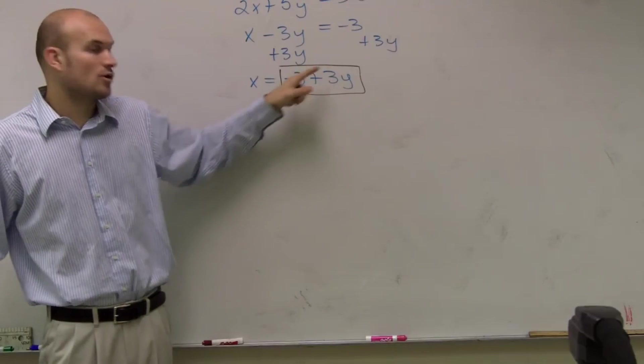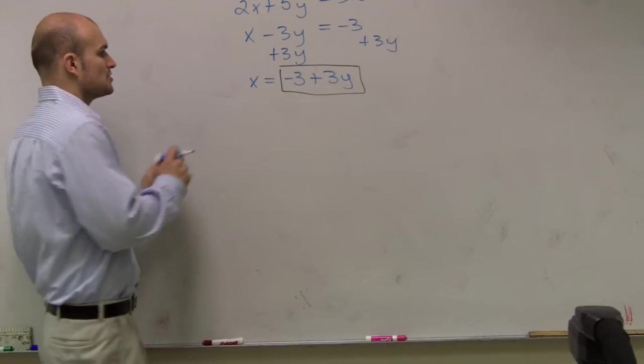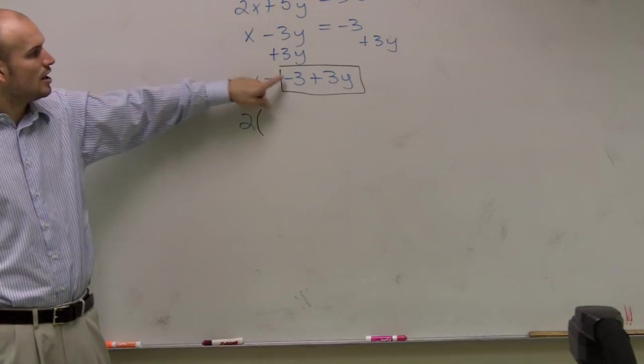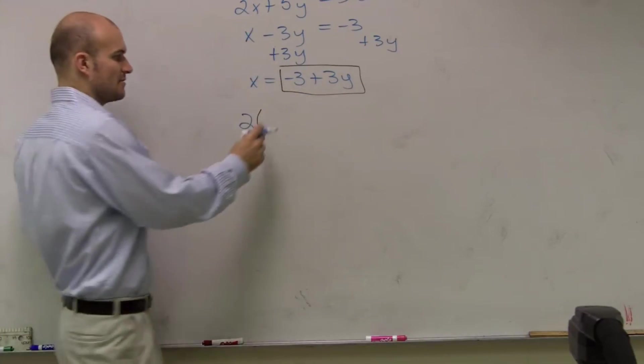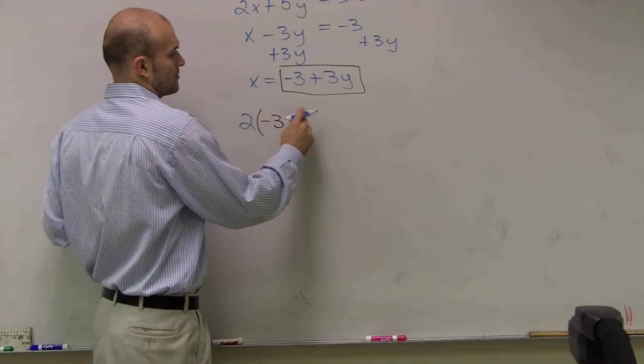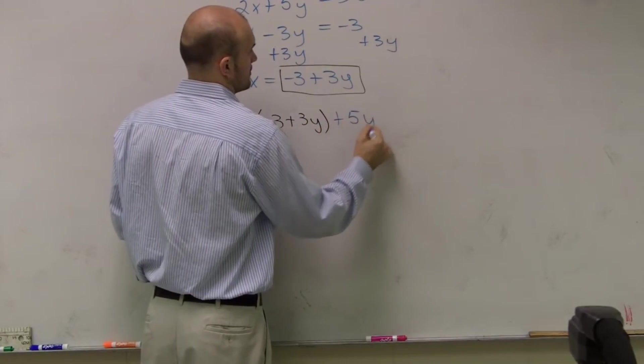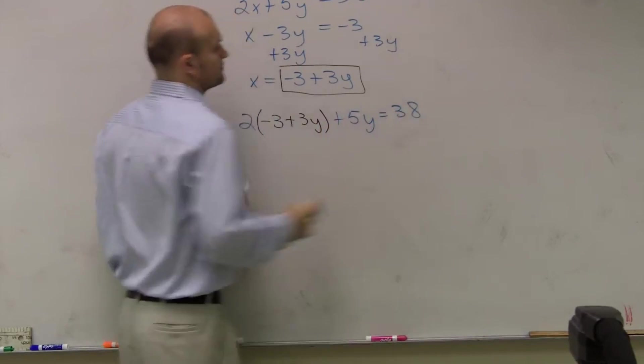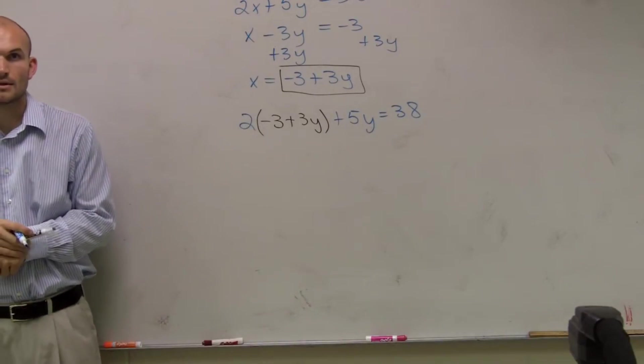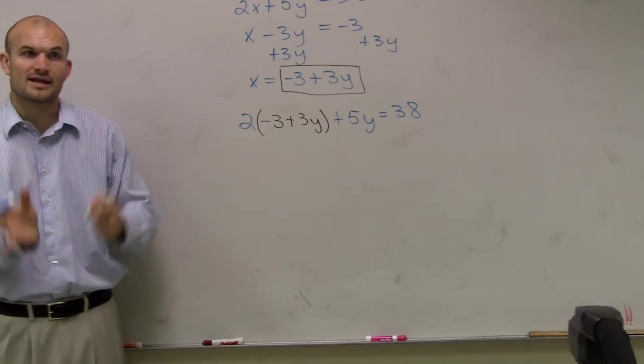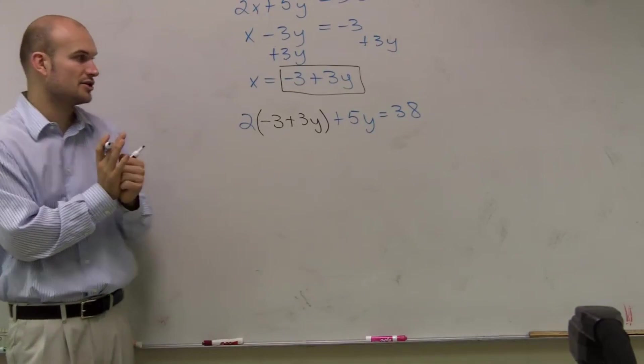Which is x equals negative 3, or which is negative 3 plus 3y. So I'm going to write 2 times, instead of x, I'll write what the value of my x is from the other equation. Does everybody see what I did? I solved for a variable in one equation, and I substituted that into the other equation.